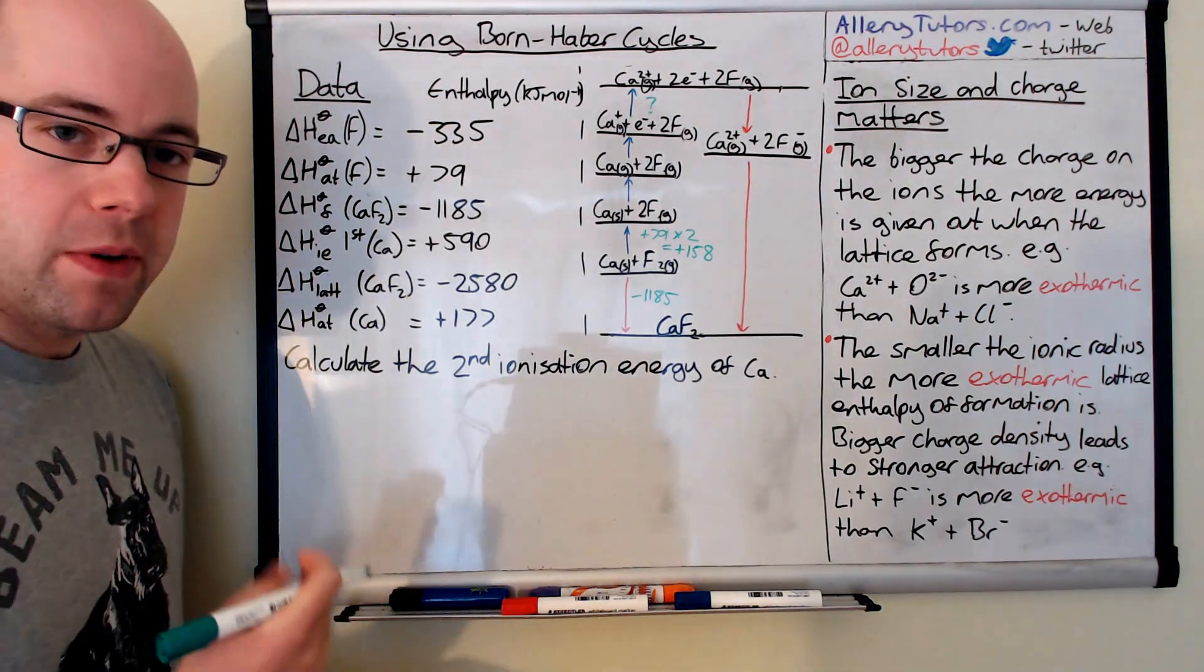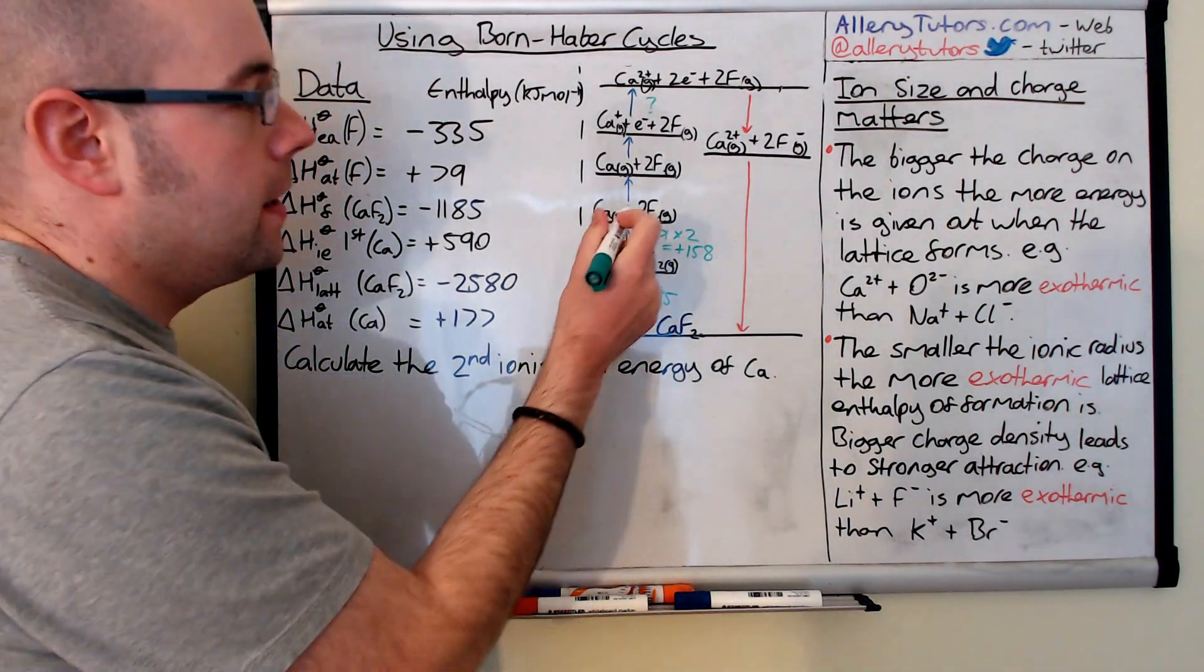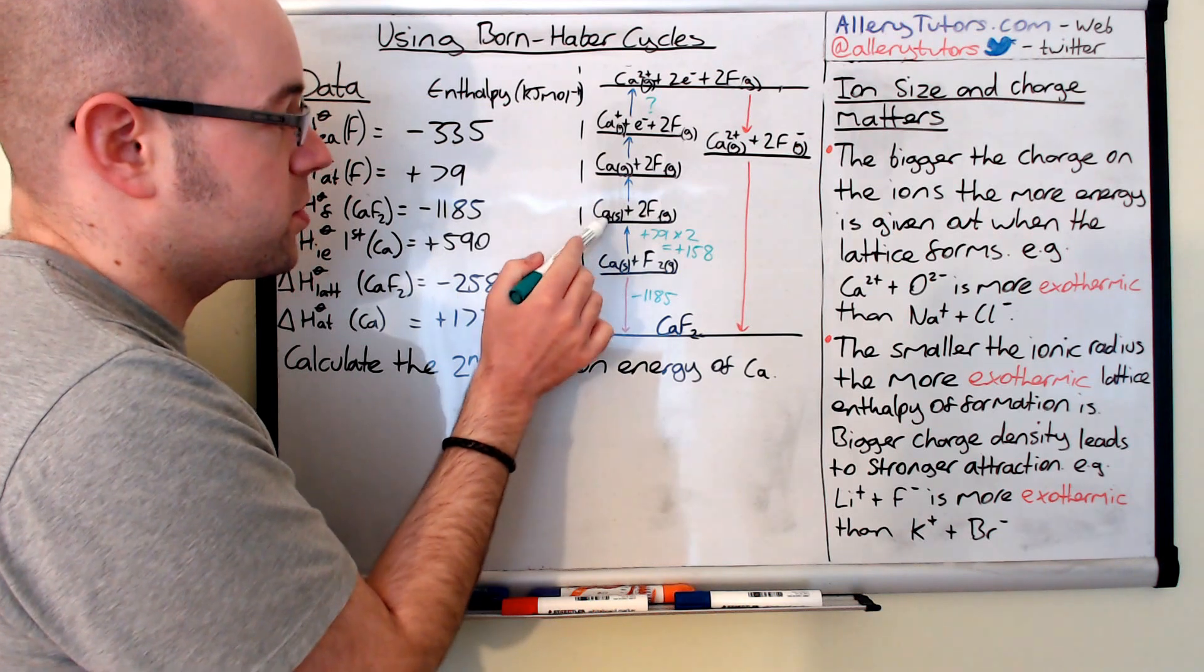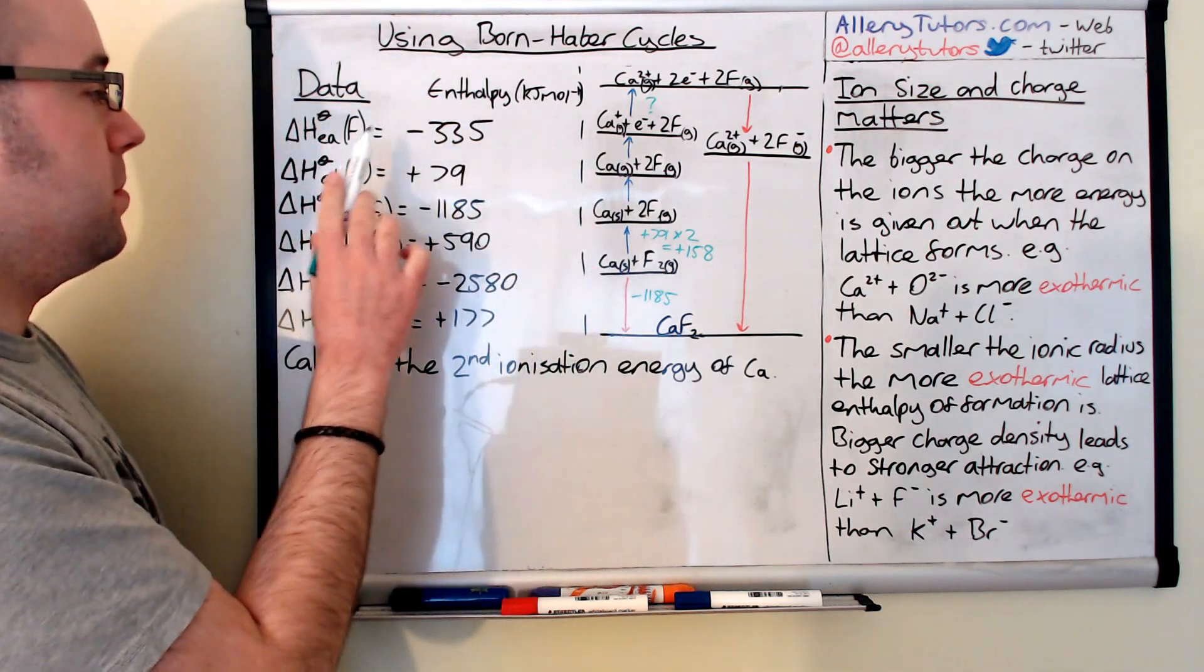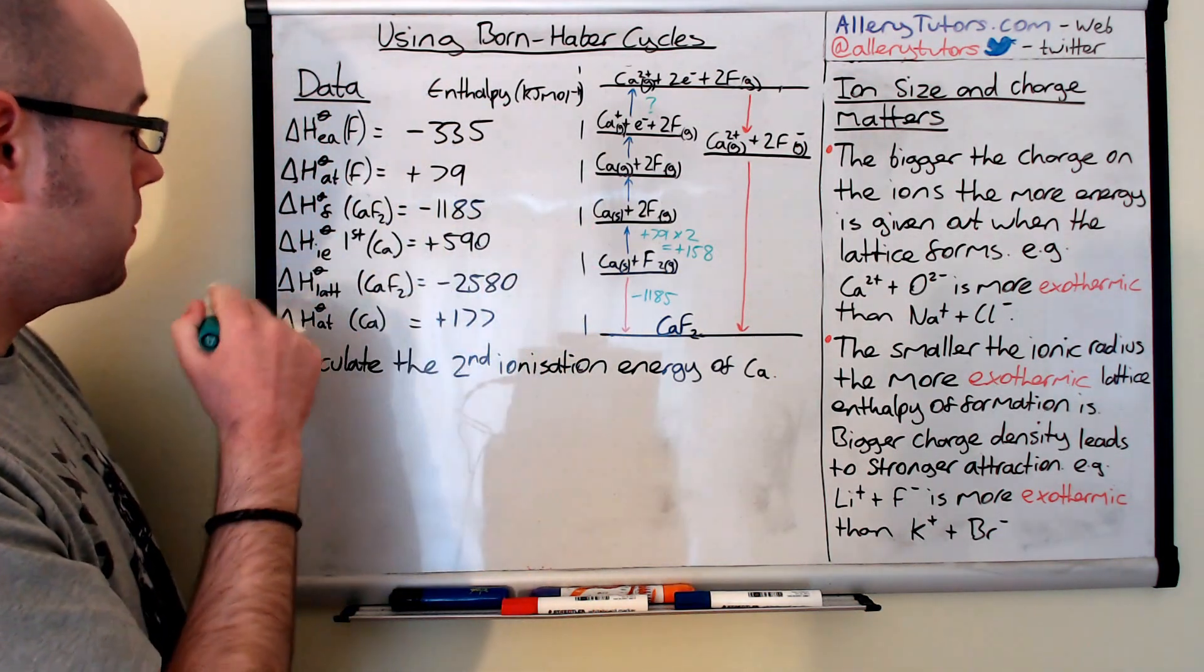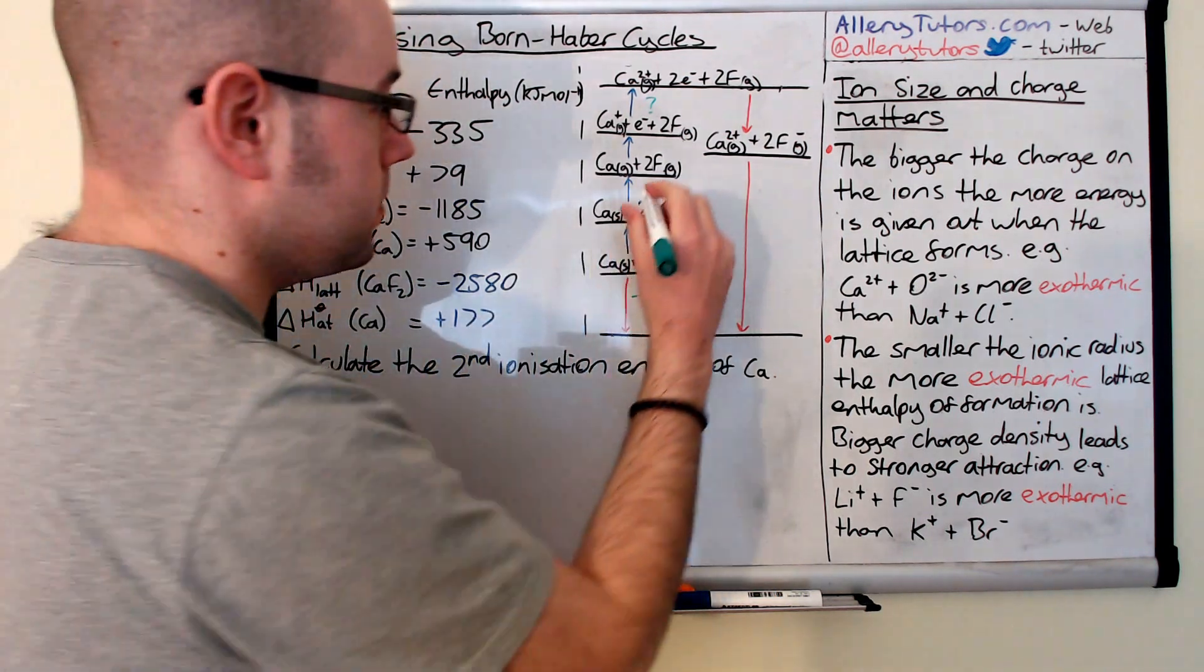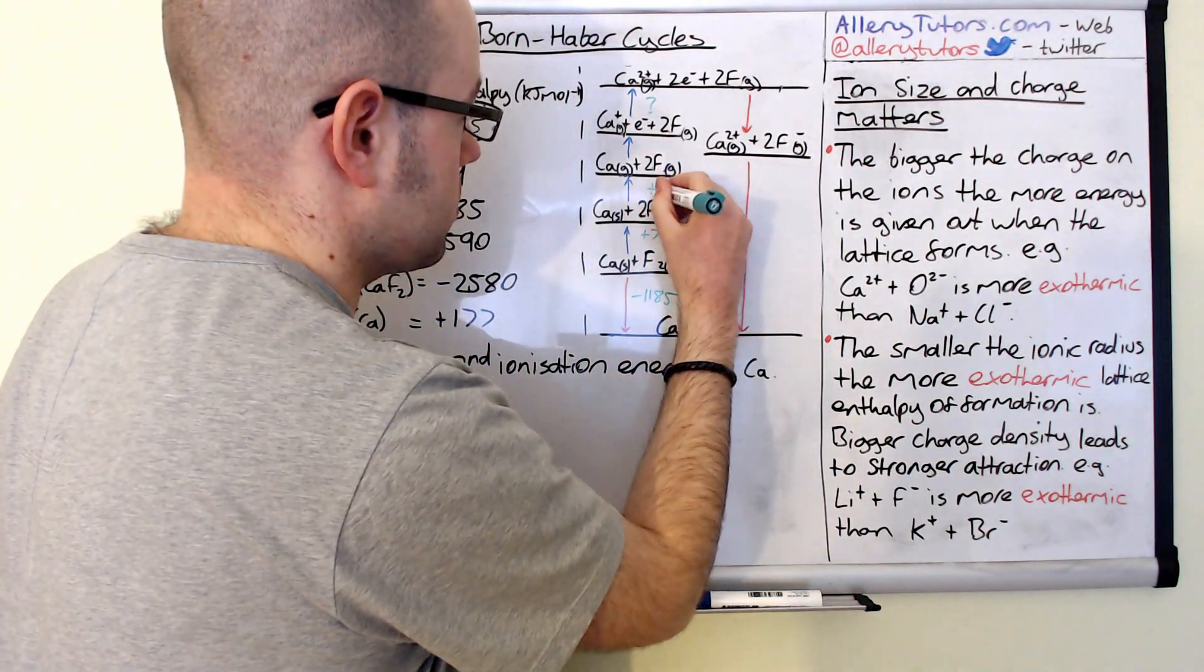Okay all these numbers by the way are in kilojoules per mole. Okay so the next one is atomization of calcium. You can see we're going from solid to a gas. So atomization of calcium we only need one of them. So if we can find it there it is. It's plus 177. So we'll just put that there. Plus 177.